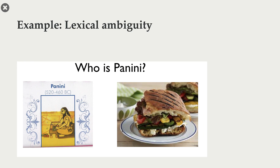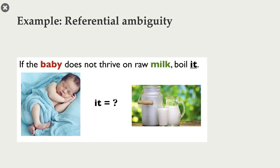In the Panini example we saw before, there was lexical ambiguity and we needed some common sense knowledge to resolve it. Here is another example of ambiguity. Consider this sentence: 'If the baby does not thrive on raw milk, boil it.' The ambiguity here is whether the pronoun 'it' refers to baby or milk. With our common sense knowledge, we know that we don't really boil babies, but we boil milk. So it is likely that the pronoun 'it' refers to milk and not baby.